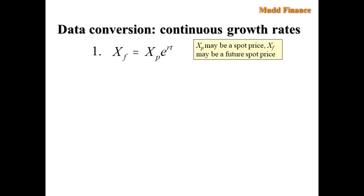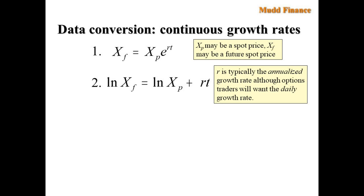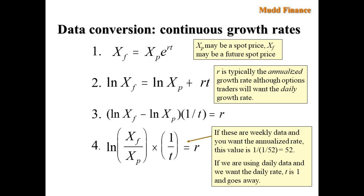So for data conversion, we therefore assume the following. So we start with this assumption that the future price is equal to the present price compounded. We then take the natural log of that and get this linear expression here. Then we rearrange the equations and get the difference of logs adjusted for time is equal to the growth rate r. And that can also be written as the log of the ratio adjusted for time is equal to r.